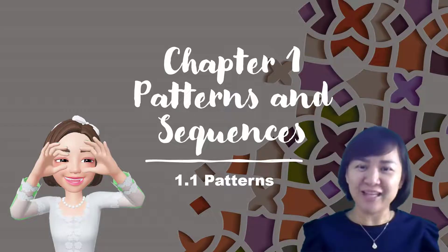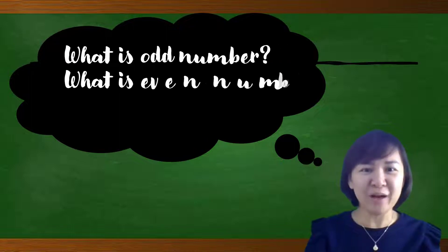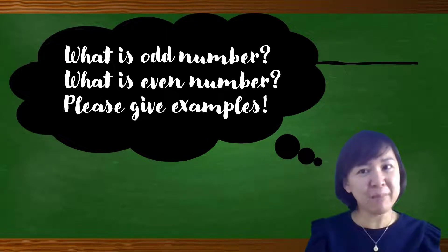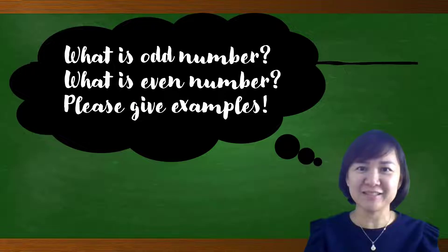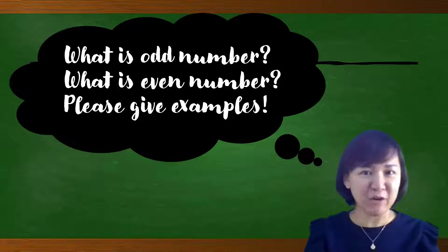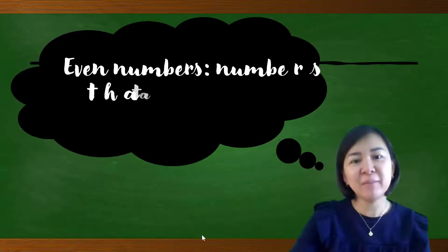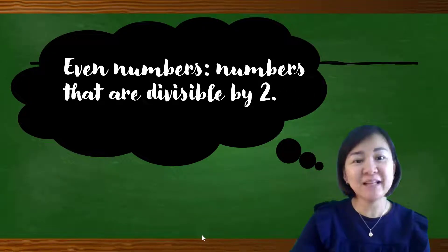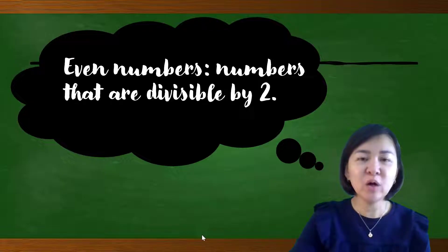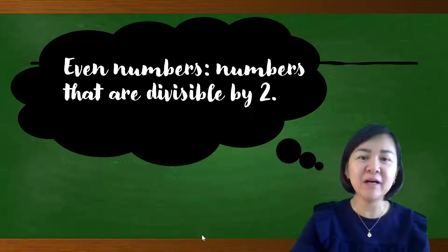Let's start our lesson today. What is an Odd Number? What is an Even Number? Please give examples. Is 2 an odd number? Is 4 an even number? Even numbers are numbers that are divisible by 2. For example, 2, 4, 6, and 8 — all these numbers are divisible by 2.